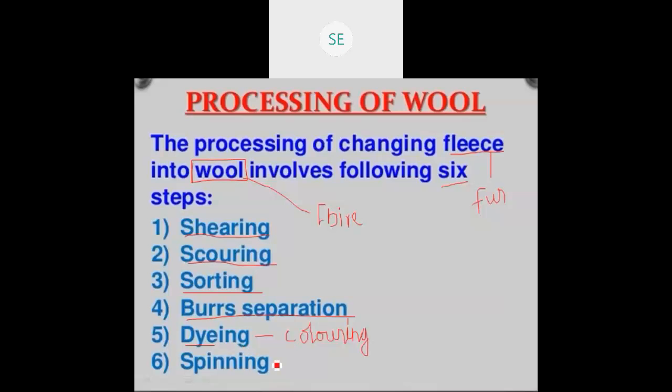And then spinning. After giving the desired colour, we are going to spin the fiber and make it into a cone. Then it can be used to make products like sweaters, shawls, carpets, etc. These are all the processes of wool making.